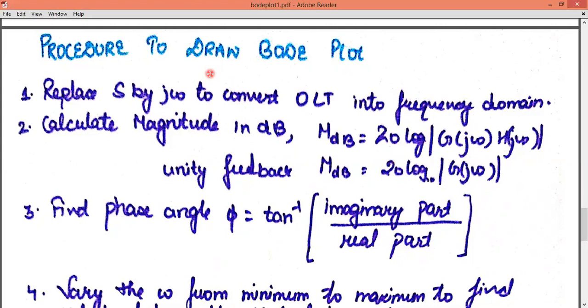What is the procedure? First of all, whatever S value you have in the question, you have to replace it with frequency domain. You need to replace S with jω. Why? Because we are talking about frequency domain.